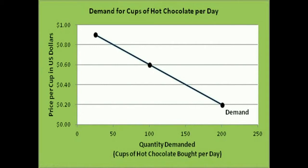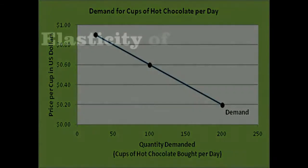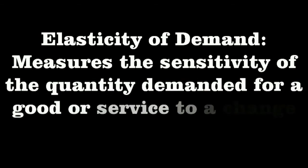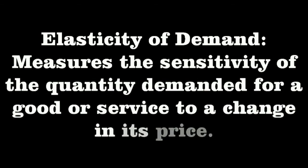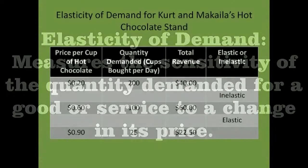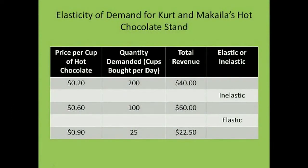Each of these points is on the demand curve for hot chocolate in Kurt and Mikaila's neighborhood. Second, Kurt and Mikaila introduced us to the concept of elasticity of demand. The elasticity of demand measures the sensitivity of the quantity demanded to a change in a product's price. When Kurt and Mikaila raised their price from 20 cents to 60 cents a cup, their revenues increased from $40 to $60. This is because the quantity demanded is not very sensitive to a change in price between 20 cents and 60 cents a cup.